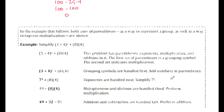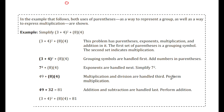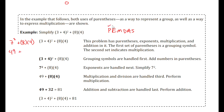Let's try an example with parentheses: (3 + 4) squared plus 8 times 4. We begin by simplifying inside the parentheses: 3 plus 4 is 7. So we have 7 squared plus 8 times 4. Then we evaluate the exponent: 7 squared is 49. Next, multiplication: 8 times 4 is 32. There is no division, so we do the addition: 49 plus 32 is 81.